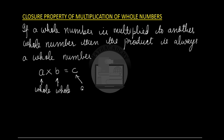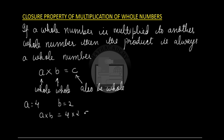Let us take an example. Let a be 4 and b be 2. Then a times b is 4 times 2, which gives us 8. So 4 is a whole number, 2 is a whole number, and the product 8 is also a whole number, and hence the closure property holds good for multiplication of whole numbers.